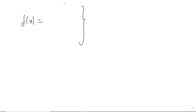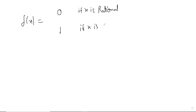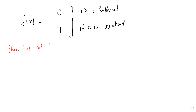Define f(x) = 0 if x is rational and f(x) = 1 if x is irrational. This is a very strange function — you can't even draw its graph. We want to show that f is not continuous at any point x in ℝ. Our gut feeling says it's not continuous because it keeps changing by large values.